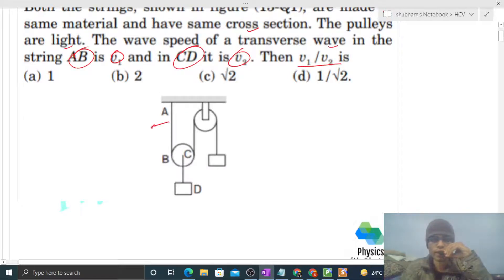Now we have two strings, AB and CD. Both have the same cross-sectional area, let's say small A. Both are made of same material, which means both have the same density, let's say rho. The tension in wire AB, let's say that is T1, and in wire CD the tension is T2.